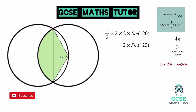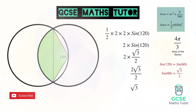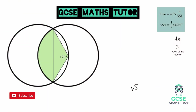If you don't know the exact trig values, I'll link a video in the description. Replacing sine 120 with root 3 over 2, we get 2 times root 3 over 2, which simplifies to 2 root 3 over 2, and dividing top and bottom by 2 leaves us with root 3. So the area of the triangle is root 3.